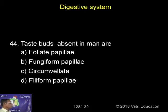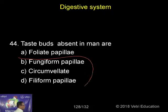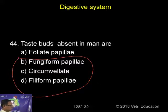Taste buds absent in man: in the case of rabbit we have four types of taste buds, and in man only three types of taste buds, that is what is called the papillae. The taste buds are accumulated together into what are called papillae. We have three different types of papillae — fungiform papillae all over the tongue, circumvallate papillae at the posterior end, and filiform papillae also on the surface of the tongue.